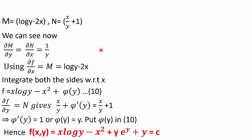Multiplying by 1/y, the new M = log y - 2x and new N = x/y + 1. del M by del y and del N by del x are both 1/y — equal, so exact. Integrating del f by del x = log y - 2x with respect to x gives f = x log y - x² + φ(y). Differentiating with respect to y and equating to N gives φ'(y) = 1, so φ(y) = y. The solution is f(x,y) = x log y - x² + y = c.